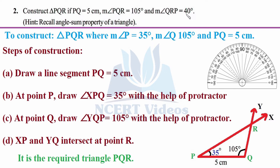Since all three angles must measure up to 180 degrees: 105 plus 40 equals 145, and 180 minus 145 equals 35 degrees. Therefore, angle P equals 35 degrees. We must use angles P and Q since PQ is the given side and we are applying the angle-side-angle criterion of congruence. The hint referred to the angle sum property — all angles in a triangle sum to 180 degrees. PQ is 5 centimeters.